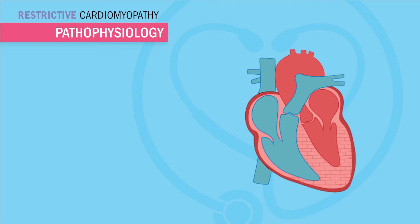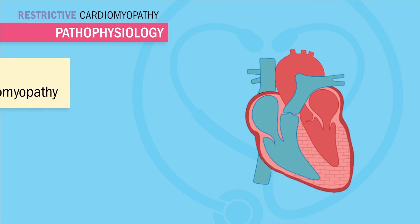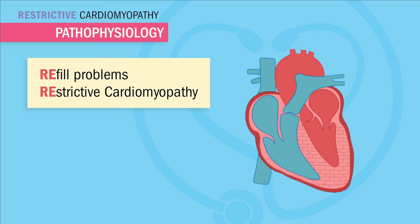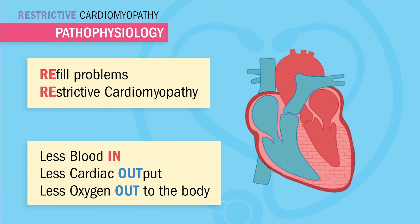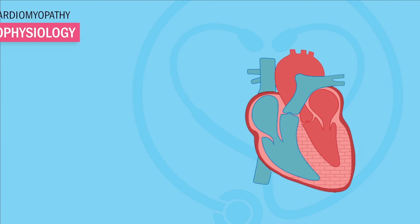The heart muscle is very stiff and hard like a rock or hard like a brick wall. This doesn't allow for the ventricles to stretch, and if they don't stretch they can't get blood in. And if they can't get blood in, then they can't refill — that's restrictive cardiomyopathy. This is caused by either genetics or scar tissue buildup in the heart muscle itself. The main point is we have less blood into the heart, which means less blood out to the body, less cardiac output, and less oxygen out to the body.